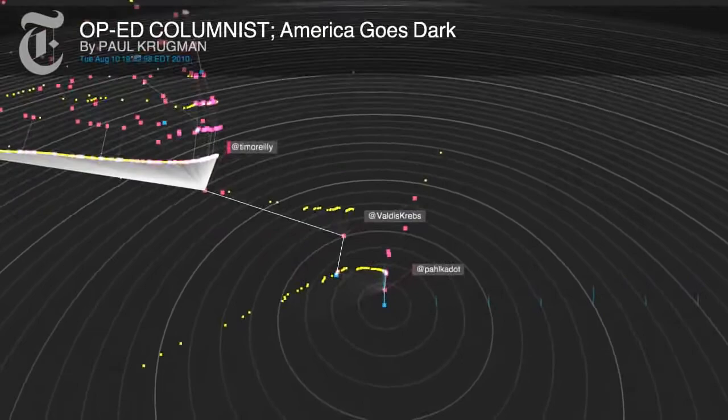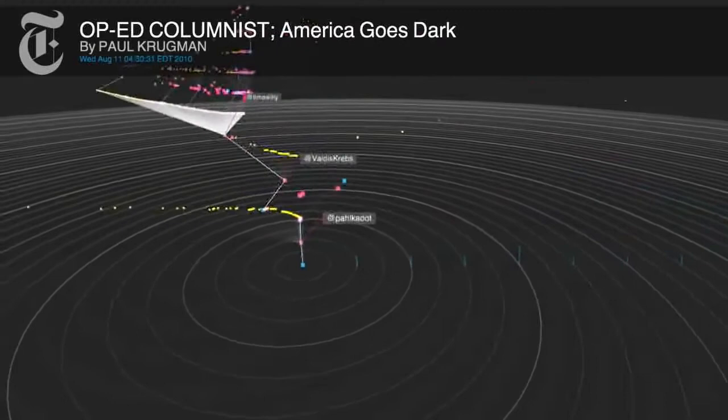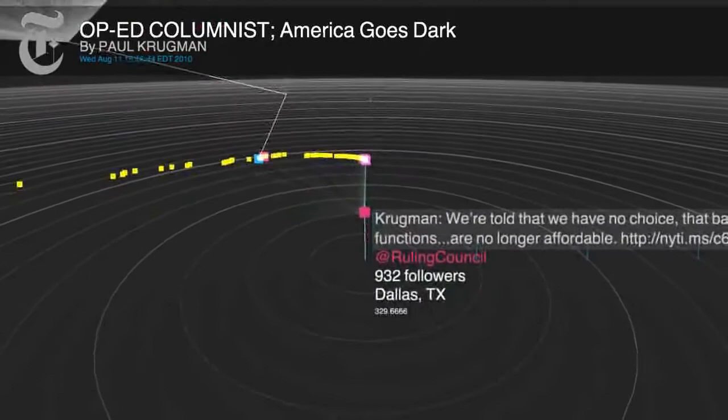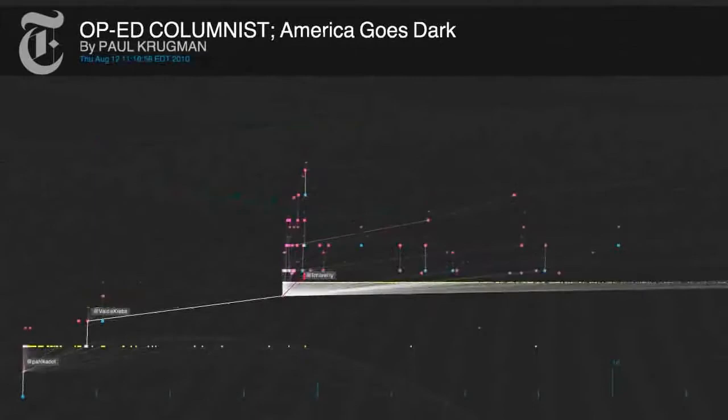To help get a better understanding of the complex data, the tool provides multiple views. We can view a Cascade in whole to understand its depth and breadth, and we can zoom in to important events in the Cascade to see key points in how the sharing activity unfolded. Complex Cascades can also be pruned to show only those key nodes, revealing the backbone of the conversation.